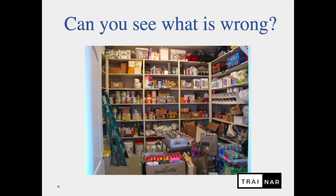I'd like you to take a second and look at this particular picture and think about what is wrong. There are actually many things wrong here: there are quite a lot of boxes on the floor which prevents access to the end shelves; storage is stocked all the way to the ceiling, which can be a fire hazard; and some food is stored on the floor, which can be a health hazard and can lead to food poisoning and violation of HACCP regulations. This is a good example of how we should not keep our dry storage area.